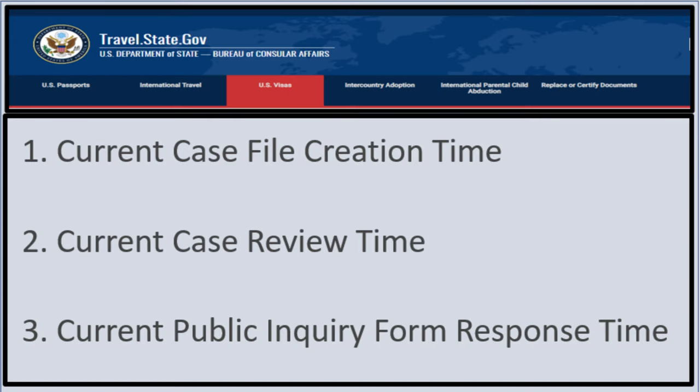If you follow my channel, you already know what this means. We have three processing time metrics. First is current case file creation time. Second is current case review time. And the third is current public inquiry form response time. The top two are crucial to your case and you must understand them. We're going to define them and give the processing times.